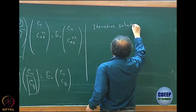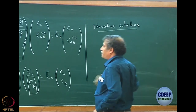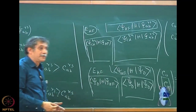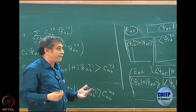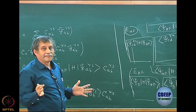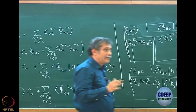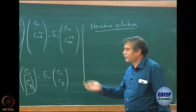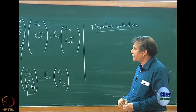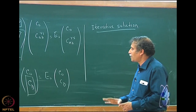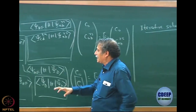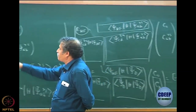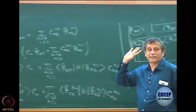We often want the ground state and maybe the first or second excited state, so there are better ways — iterative solutions to the eigenvalue problem which are much better. I will mention something during the course of the CI problem: there is an iterative solution in which you can get one or two roots — ground state and first excited state — quite quickly and at reasonable accuracy, without actually diagonalizing the full matrix.